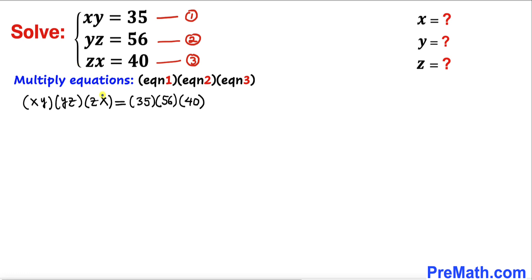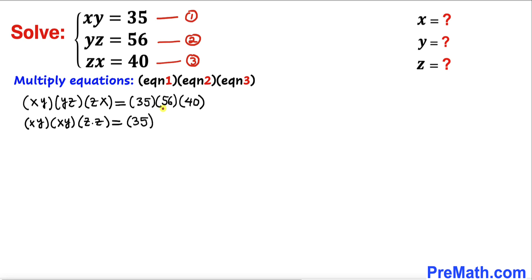Now let me go ahead and rearrange these variables on the left-hand side. I can move this x and put the two z's together. On the right-hand side, let me write 35, and now let's focus on 56 — we can write that as 7 times 8 — and 40 can be written as 5 times 8. So I can write the right-hand side as 7 times 8 times 5 times 8.